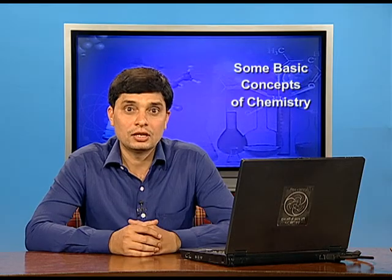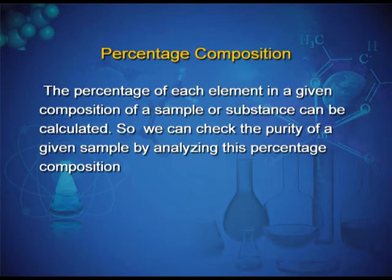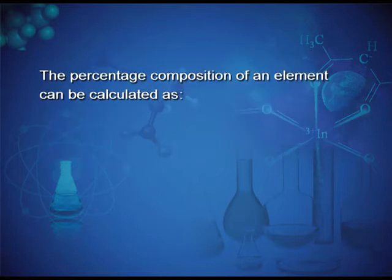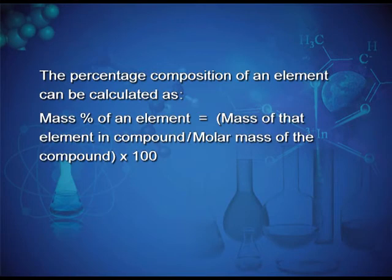Next is percentage composition. The percentage of each element in a given sample or substance can be calculated to check the purity of a given sample. The mass percent of an element = (mass of that element in the compound ÷ molar mass of the compound) × 100.